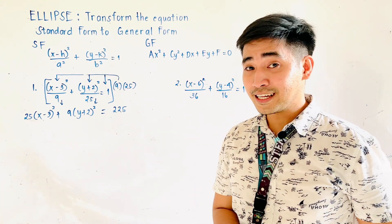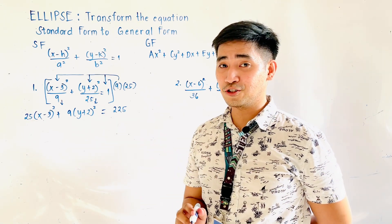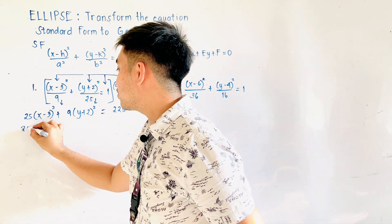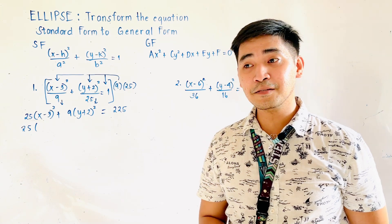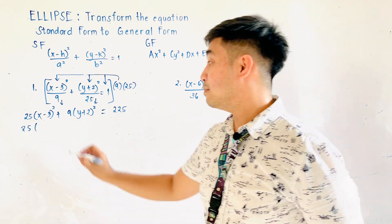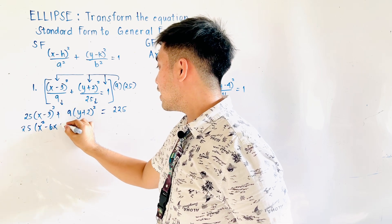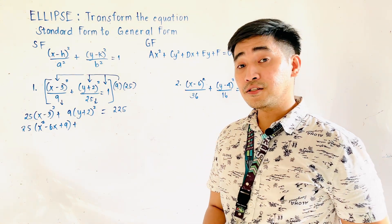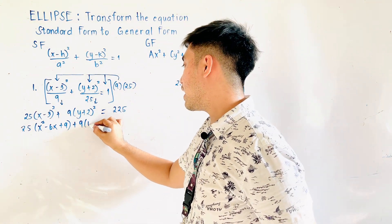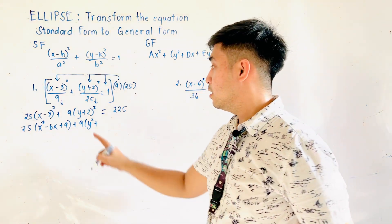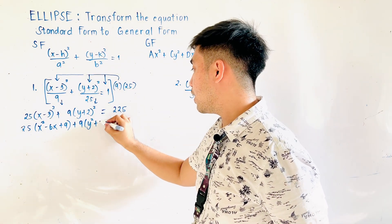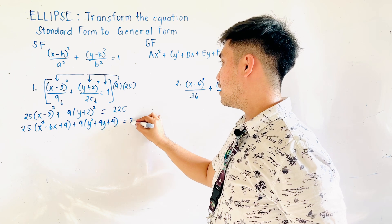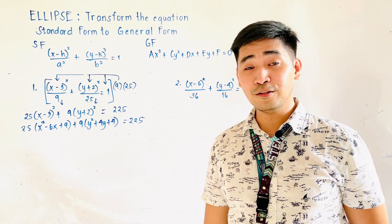What do we do next? We need to expand. This becomes 25 times the expansion of (x − 3)², which is x² − 6x + 9. Plus, we expand (y + 2)² — that is 9 times (y² + 4y + 4), which is equal to 225.